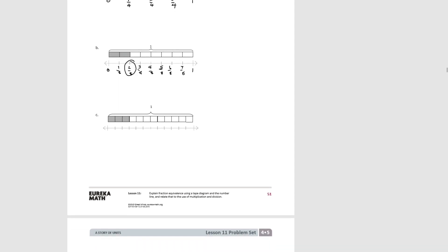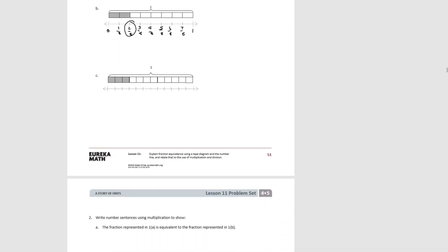Pause the video and try C. Let's mark our zero and our one. We count and see there's a total of twelve pieces, so each one of these is a twelfth. One-twelfth, two-twelfths, three-twelfths would equal the amount shaded on the tape diagram.